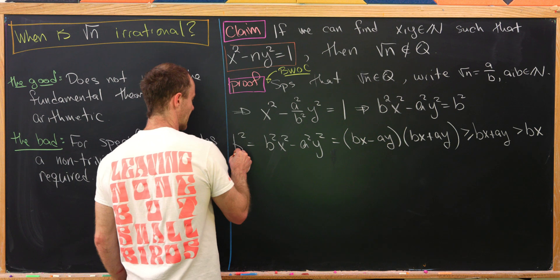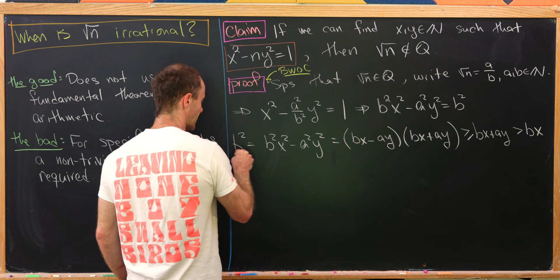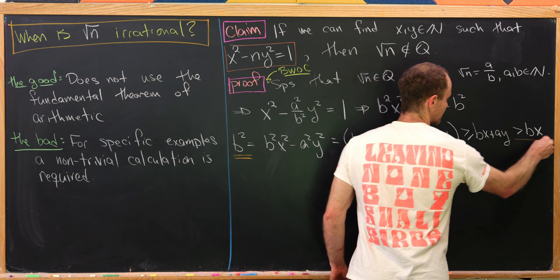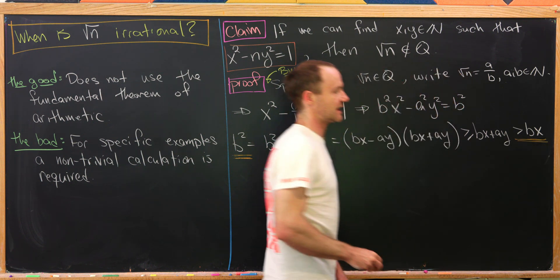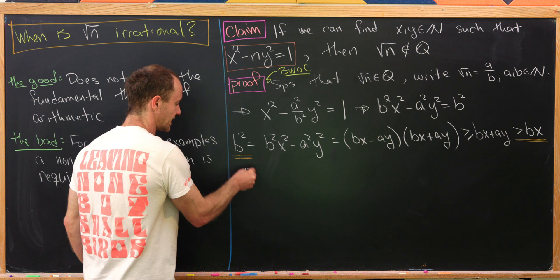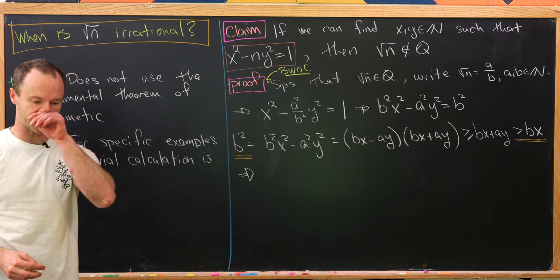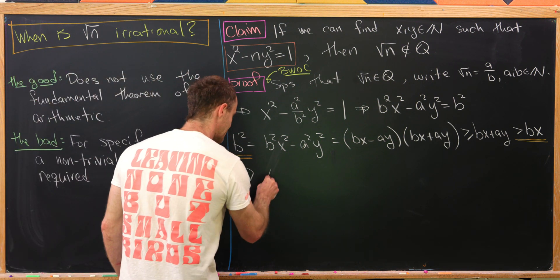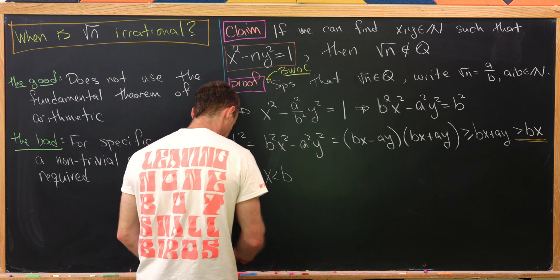But then in turn, that is strictly bigger than b times x because a and y are both natural numbers. So let's see what we have. We have b squared right here is bigger than b times x. That gives us a pretty interesting inequality, and that is that x is less than b.